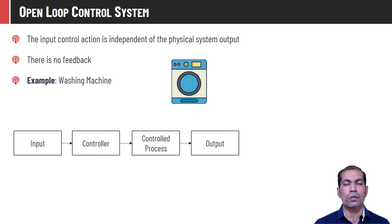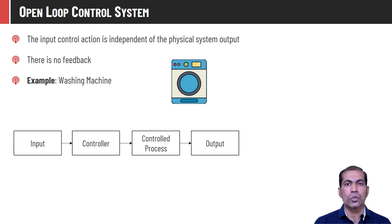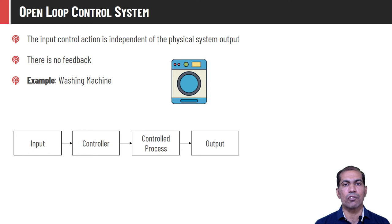An example of an open loop control system is a washing machine. Once you set the input parameters like temperature of the water, duration of the program, RPM of the machine, and instruct the controller to wash the clothes — independent of whatever the quality of the washed clothes was, it will not alter the input parameters next time. It simply reads the inputs, passes them to the controller, and produces the output.